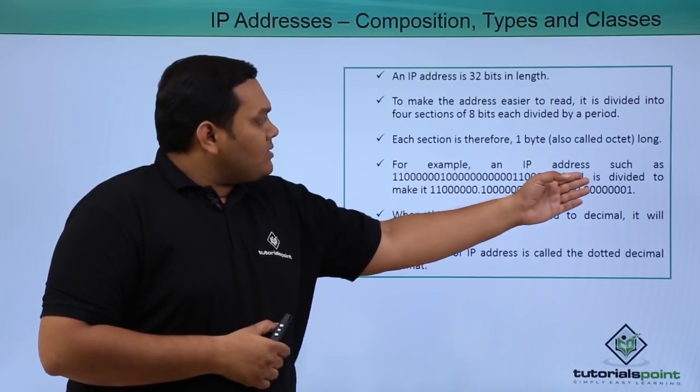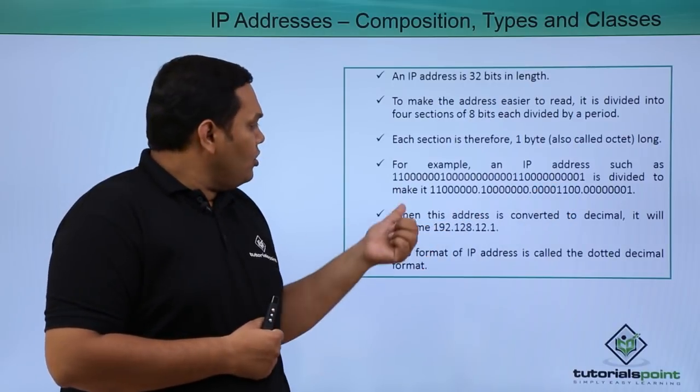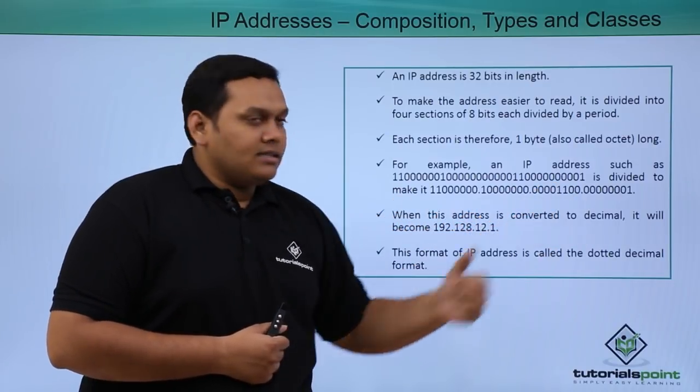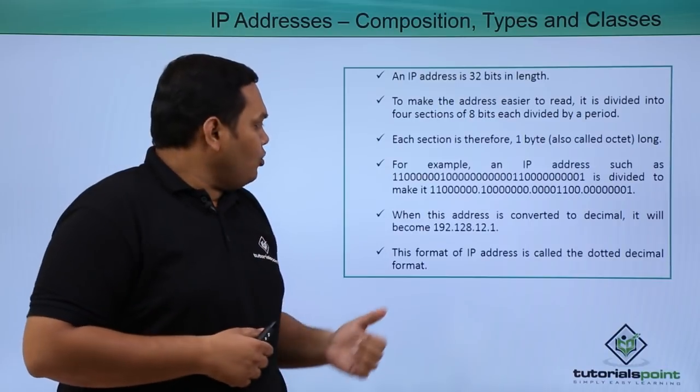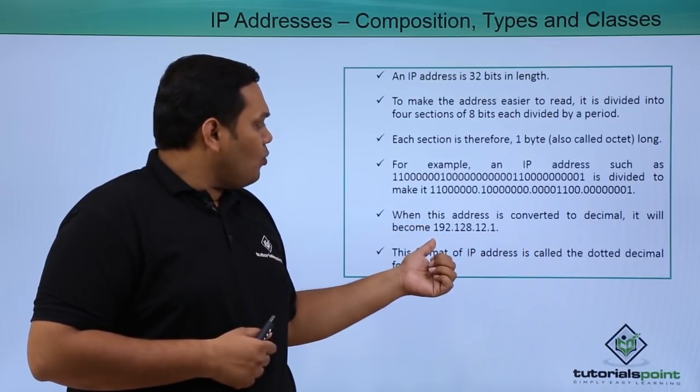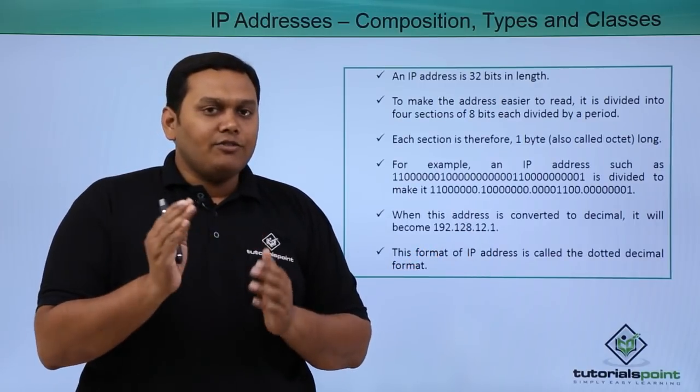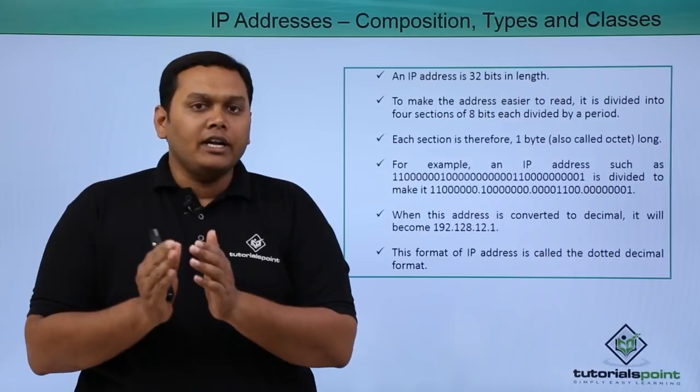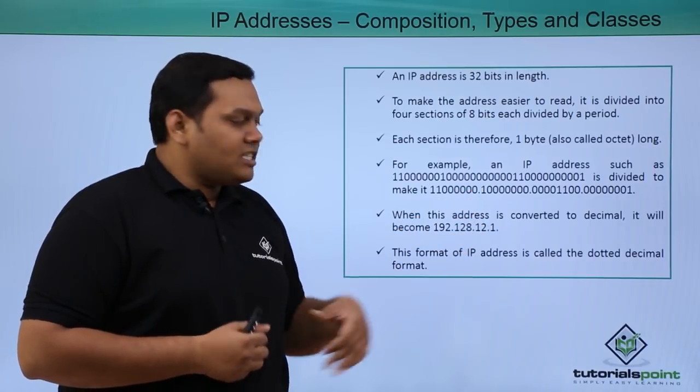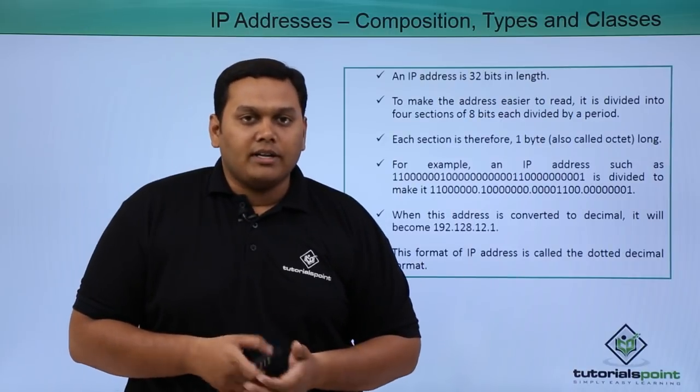For example, an IP address in binary is divided into 4 parts and is converted into an IP address. When this address is converted to decimal, it will become 192.128.12.1. In the next slide, we will look at how it is converted from binary to decimal. This format of IP address is called dotted decimal format.